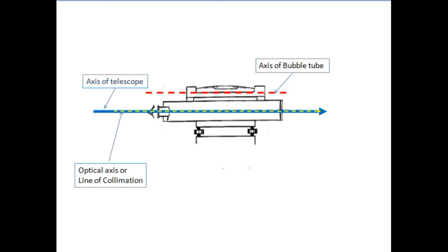In this video we are going to study the line of collimation of dumpy level as well as auto level. Look at this figure — this is the barrel of the telescope, a cylindrical tube made of aluminum or brass. The blue line is the physical axis of that tube, and the dotted line is the lens fitted in between. The optical line passing through them is what we see through, and this optical axis is called the line of collimation. It is simply the optical line passing from the eyepiece to the object glass and to the target which it is bisecting.